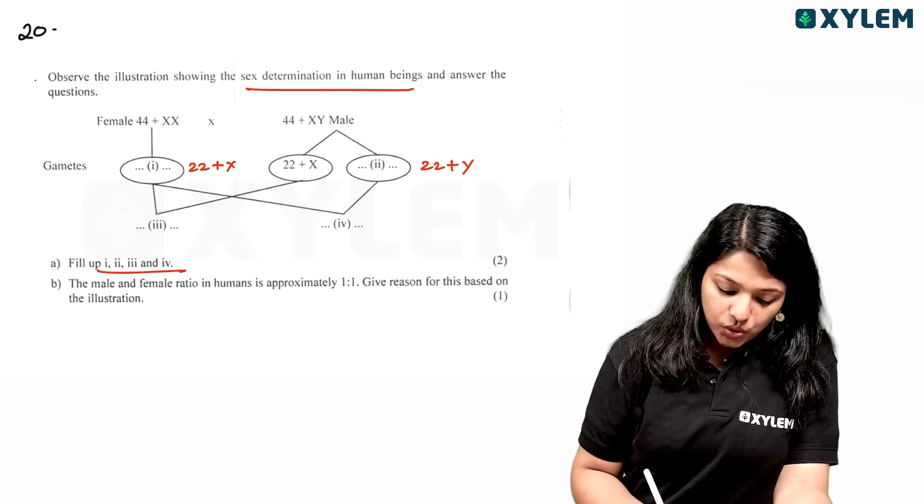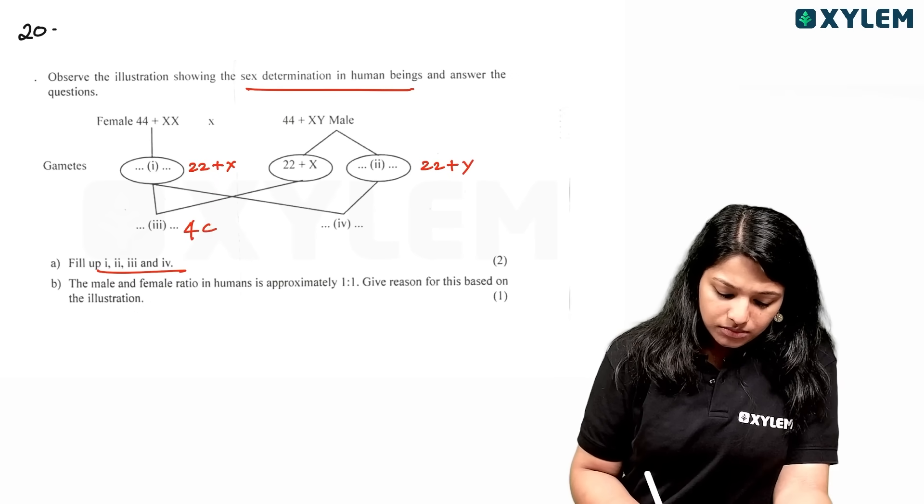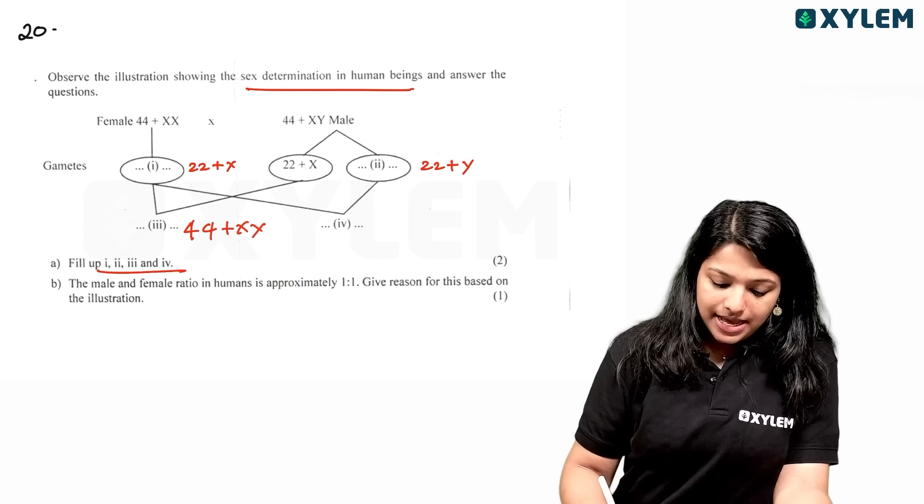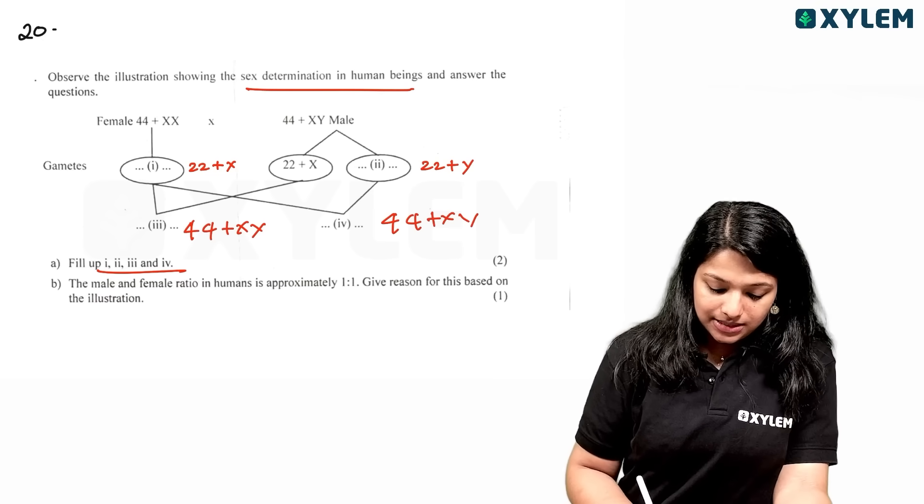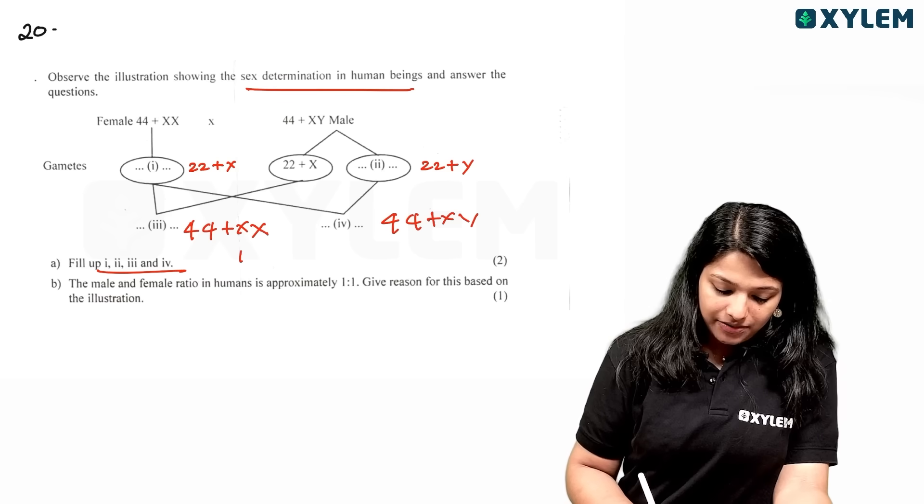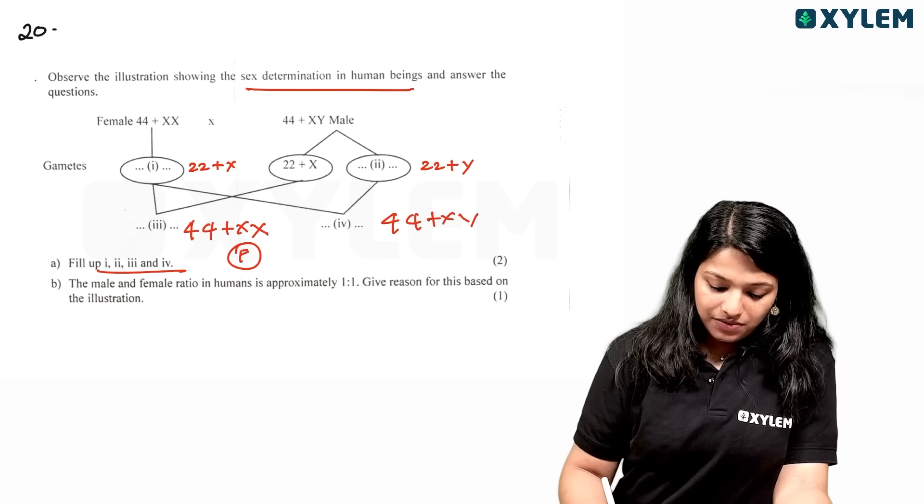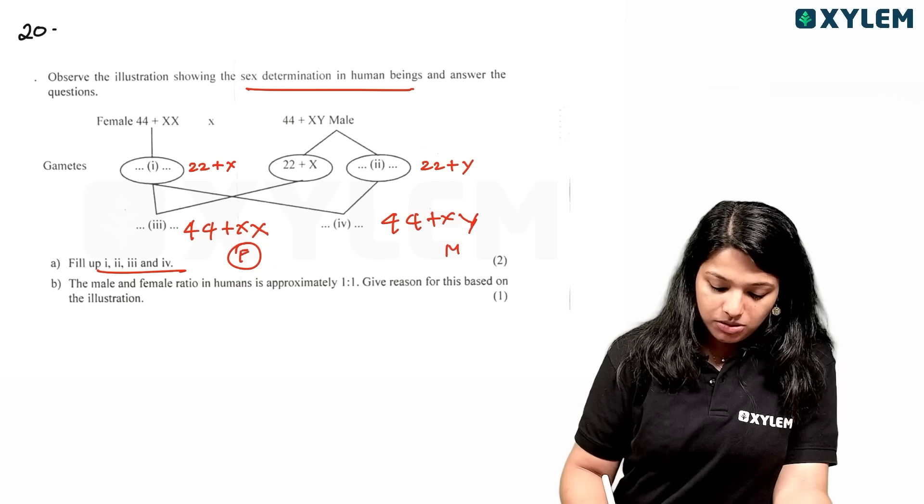This is 44 plus XX which is female, and this is 44 plus XY which is male.